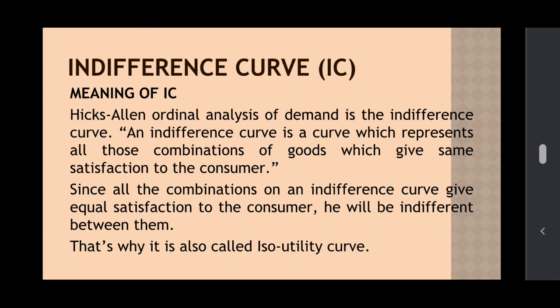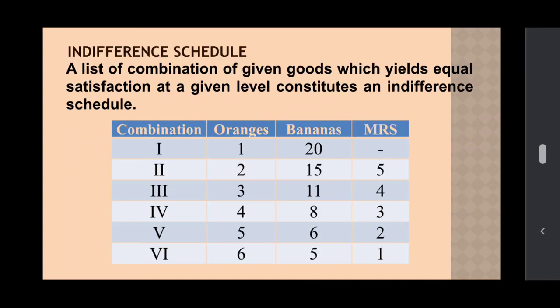Dear students, let us understand the indifference curve with the help of an indifference schedule. Schedule means a list or table, and the indifference schedule shows combinations of two goods which give the same level of satisfaction to the consumer. Look at the schedule.